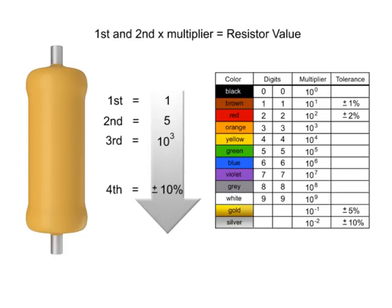Now, let's determine what the bands would be on a 15 kilo-ohm resistor.